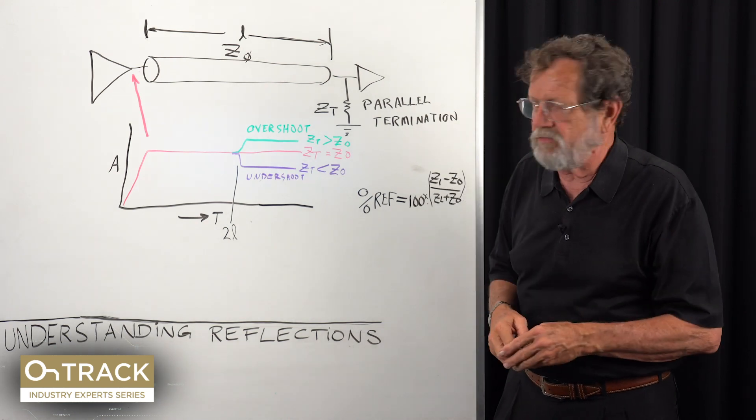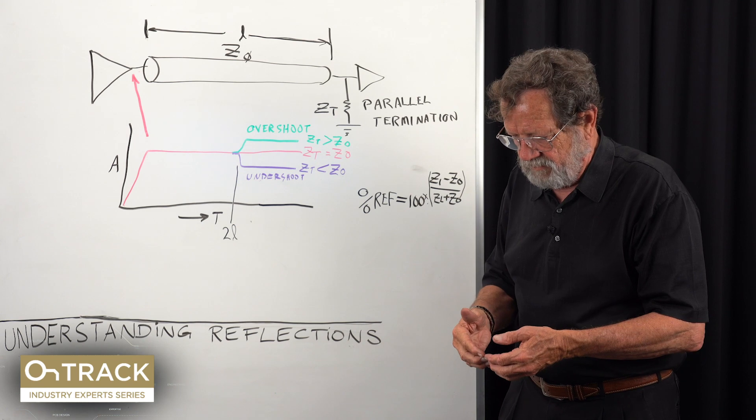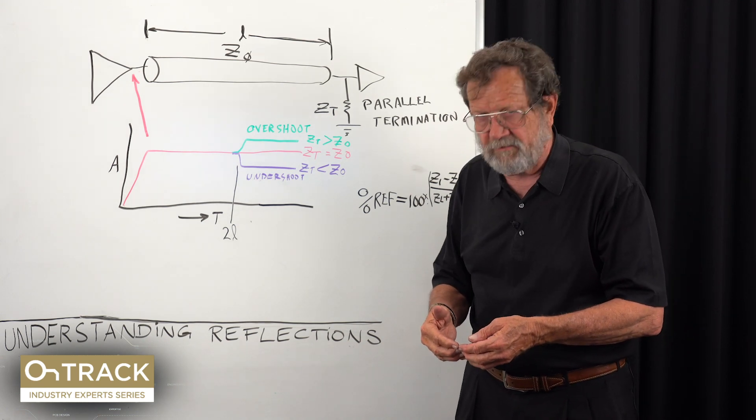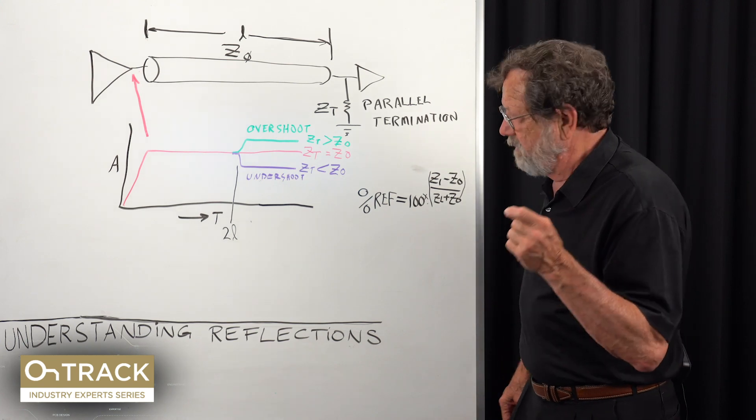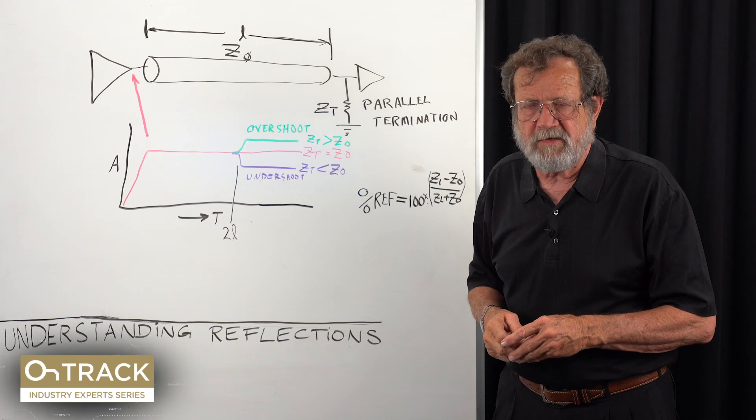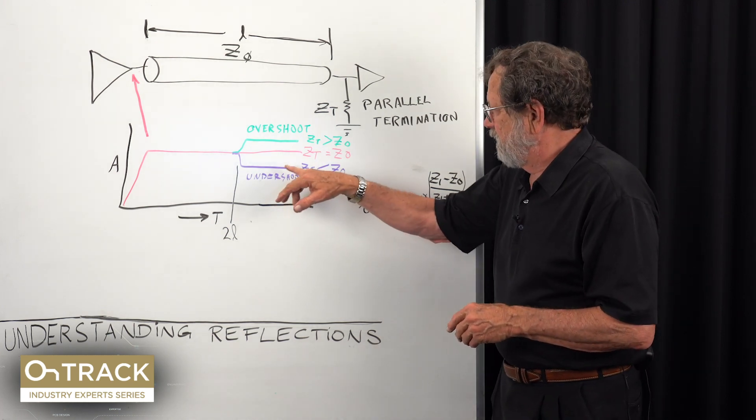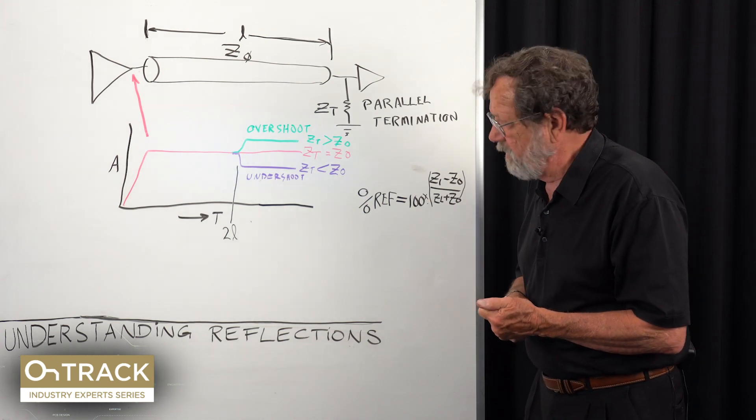Modern logic is not like that. It's not uncommon to have signal swings that are only one volt, so the amount of noise margin is not large. The chances that we'll get enough overshoot to cause a problem is pretty difficult to have happen. So with modern logic, undershoot is the problem that we have to avoid.